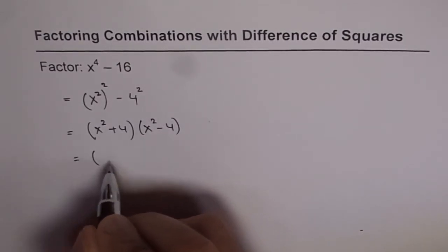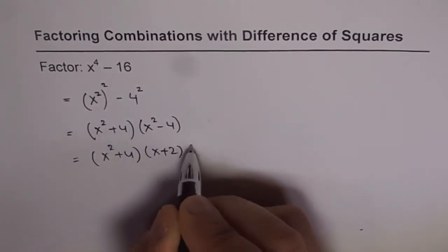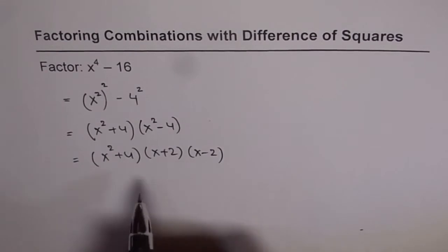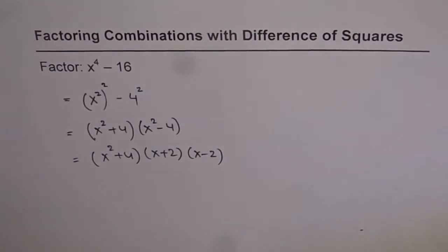So it could be written as x squared plus 4 times x plus 2 times x minus 2. Remember, x squared plus 4 is not a difference of squares, so this cannot be further factored.